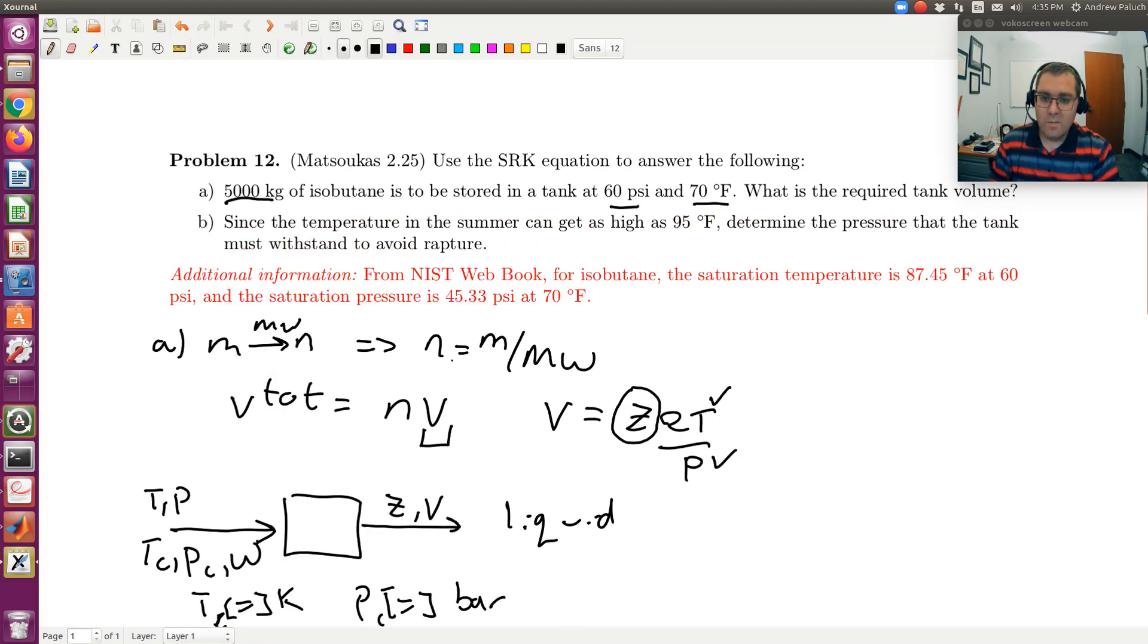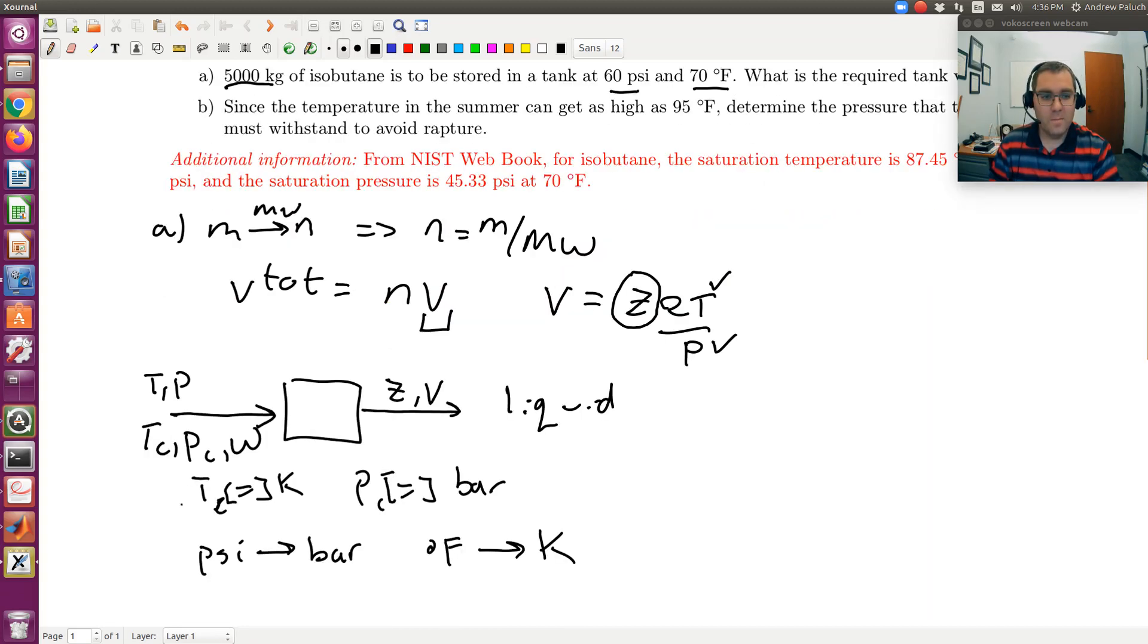So mass and molecular weight, we can use to get N. Then N times V will give you V total. So then you're going to have the total volume. And that's it.